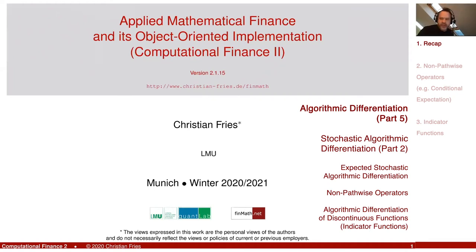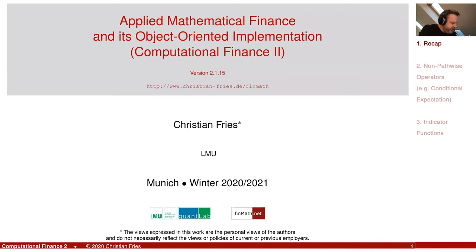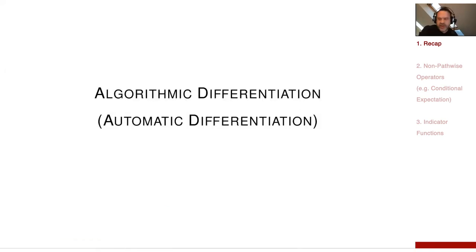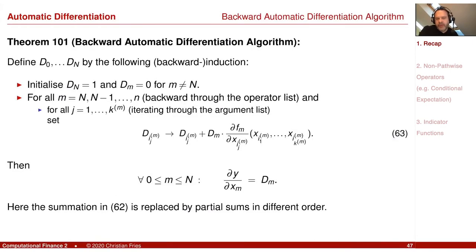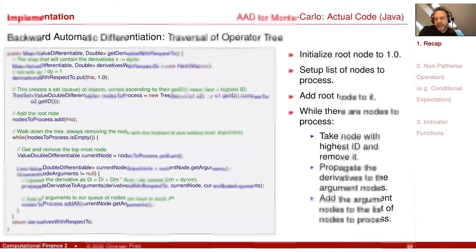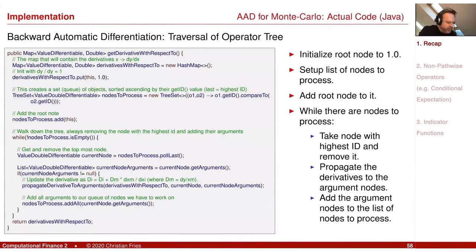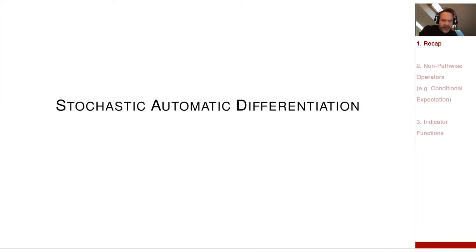Welcome to this small session on algorithmic differentiation. We still have to finish a few things. In algorithmic differentiation, we mainly discussed the backward automatic or backward algorithmic differentiation — the update rule from the chain rule performed backward. We had a very small algorithm implementing this, and in our last session we made some remarks that we can just do this algorithm on a different level.